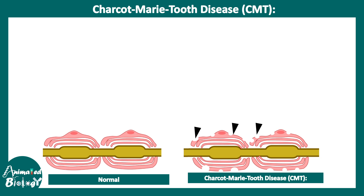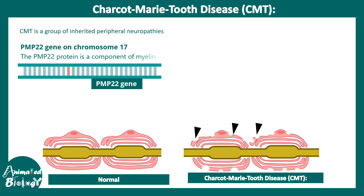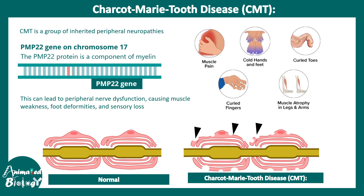Apart from Guillain-Barré syndrome, there is another condition known as Charcot-Marie-Tooth disease or CMT. Here there is also damage in the Schwann cell, but due to a mutation. These are inherited peripheral neuropathies where the mutation most commonly occurs in the PMP22 gene present on chromosome 17. This gene product helps in formation of the myelin — it is a component of myelin — so when it is mutated, the overall myelin sheath is damaged. This leads to a plethora of symptoms including muscle pain, cold feet, characteristic curled feet, atrophy of the muscles, and curled fingers.